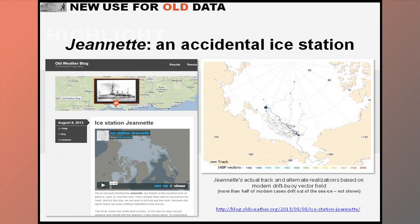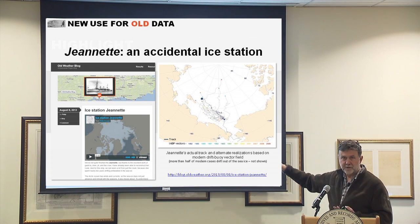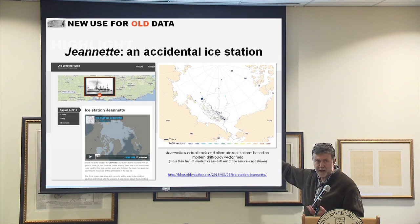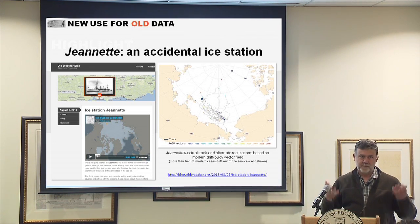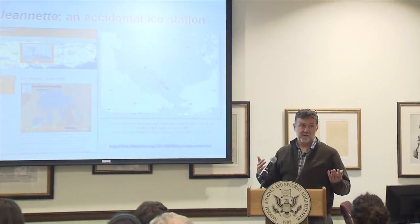Now we have the data and we can look at it in a new way, putting it in context with modern resources. This map shows the track of the Jeanette overlaid on all the virtual tracks generated from modern buoy data since we have satellites. You can see for some cases they go pretty much the same way as the Jeanette, and in other cases they head off to the North Pole, which might have been nice for them. But what I'm not showing here is that in more than half of the instances, the virtual buoys just got kicked right back out to Siberia. So it does seem like they were kind of unlucky, because there was a 50% chance when they went up there that they would just get bounced right back out again.